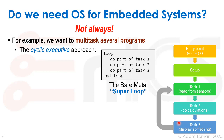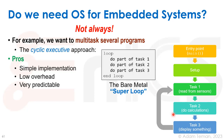For example, we can multitask several programs using the cyclic executive approach — a loop that runs parts of different tasks and then repeats. There's some entry point, a setup, then it runs the first task, the second task, the third task. One reads from sensors, does calculations, displays something, in an infinite loop. We call that a bare metal super loop: running without an OS, simple to implement, low overhead, and very predictable.